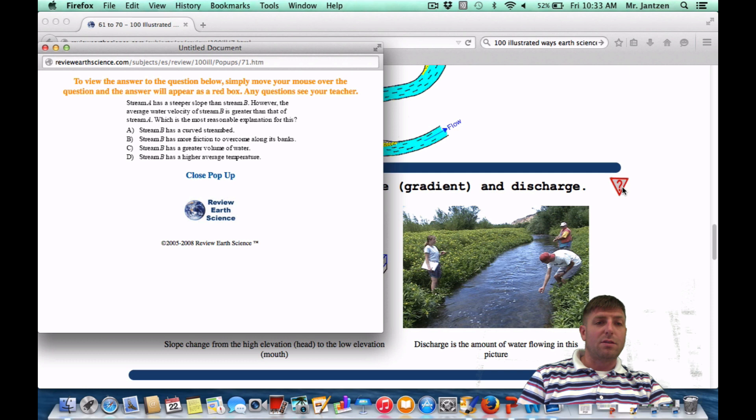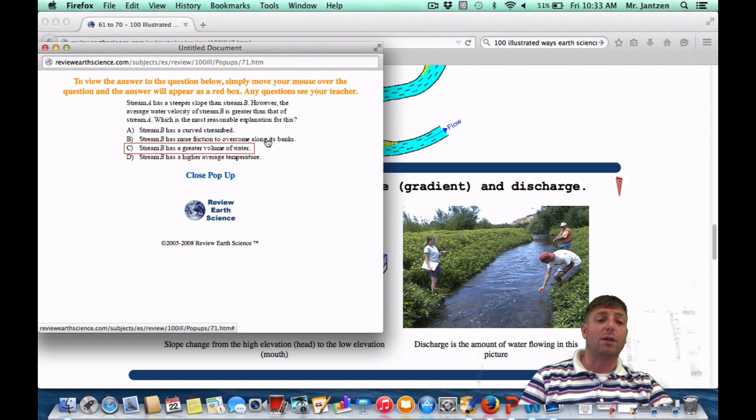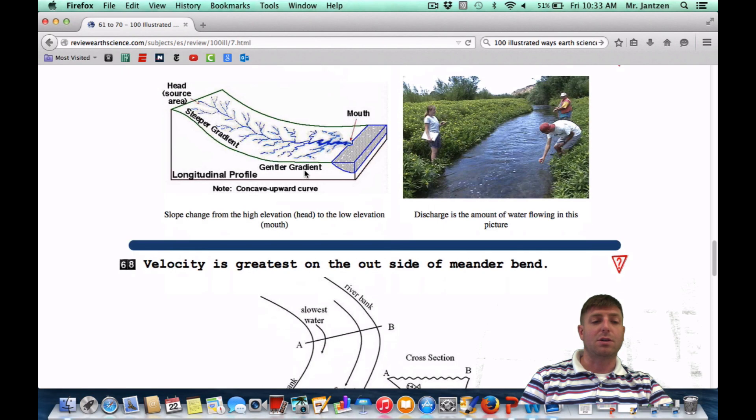Stream A has a deeper slope than stream B. However, the average velocity of stream B is greater than that of stream A. Which is the most reasonable explanation for this? So once again, why does stream B have a greater velocity than stream A? Probably because it has more water in it, or greater volume of water. Right, or choice B. Good question.